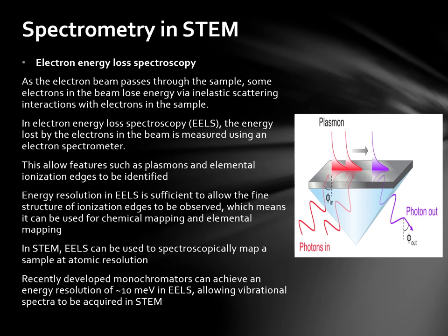There are various types of spectrometry in STEM. Firstly, we have electron energy loss spectroscopy. As the electron beam passes through the sample, some electrons in the beam lose energy via inelastic scattering interactions with electrons in the sample. In EELS, the energy lost by the electrons in the beam is measured using an electron spectrometer. This allows features such as plasmons and elemental ionisation edges to be identified. Energy resolutions in EELS are sufficient to allow the fine structure of ionisation edges to be observed, which means it can be used for chemical mapping and elemental mapping. In STEM, EELS can be used to spectroscopically map a sample at atomic resolution. Recently developed monochromators can achieve an energy resolution of 10 meV in EELS, allowing vibrational spectra to be acquired in STEM.